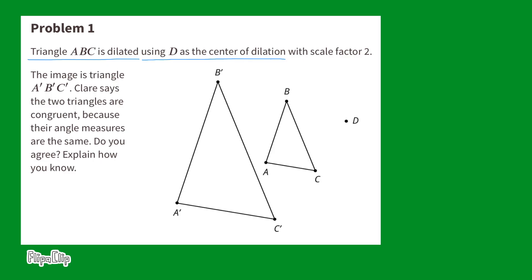Triangle ABC is dilated using D as the center of dilation with scale factor 2. The image is triangle A prime, B prime, C prime. Claire says the two triangles are congruent because their angle measures are the same. Do you agree? Explain how you know.